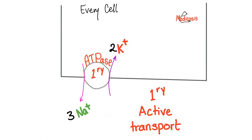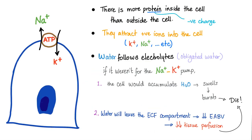The sodium-potassium ATPase: it's a primary active transport, it needs ATP, transport happens against the gradient, and it's not dependent on anyone else. It pushes three molecules of sodium out and brings two particles of potassium in. There is more protein inside the cell — anything starting with P is more predominant inside: protein, potassium, and phosphate (also magnesium). The proteins are negative and attract positive ions into the cell; water follows electrolytes in, causing the cell to swell and potentially explode.